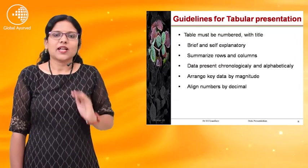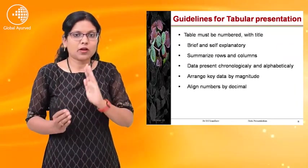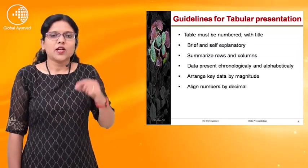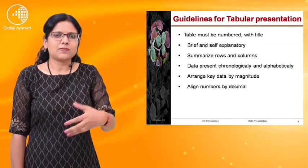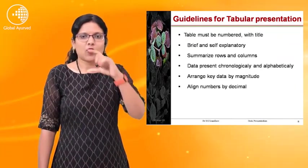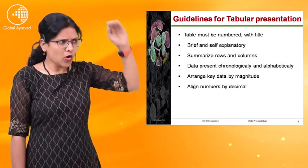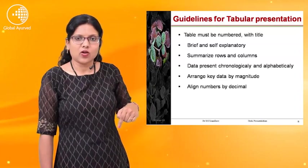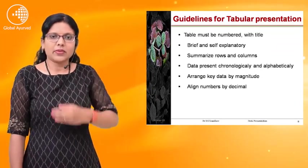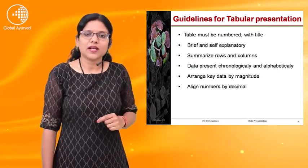Guidelines for tabular presentation: the table must be numbered — in a research article, tables are given table numbers 1, 2, 3, for easy reference. It should be brief and self-explanatory, meaning the table should be understandable without needing anyone else to explain it. Rows and column headings should be clearly given. Data should be presented in chronological and alphabetical order — ascending or descending. Key data should be arranged by magnitude, including decimal figures.